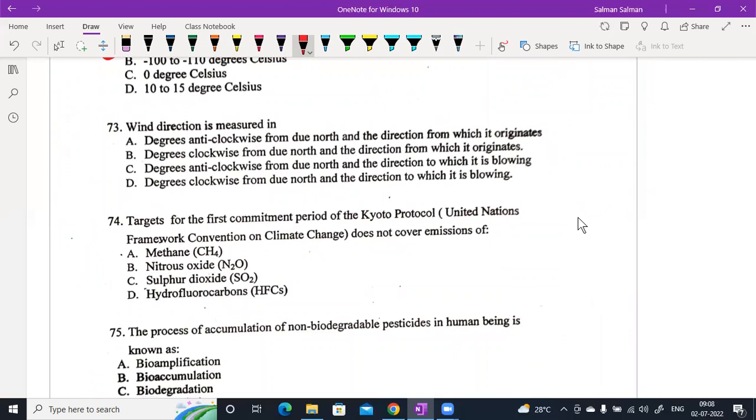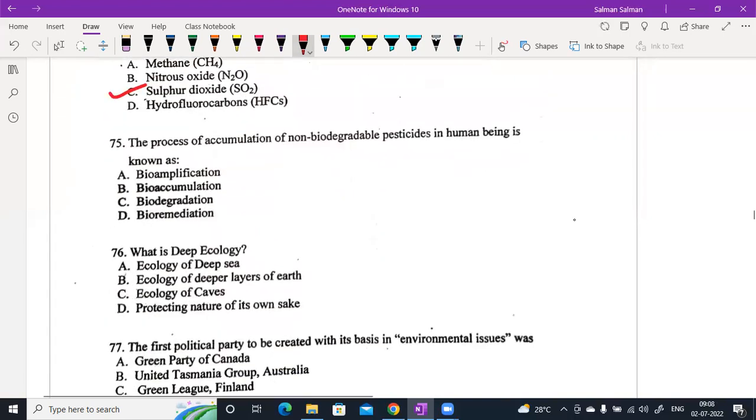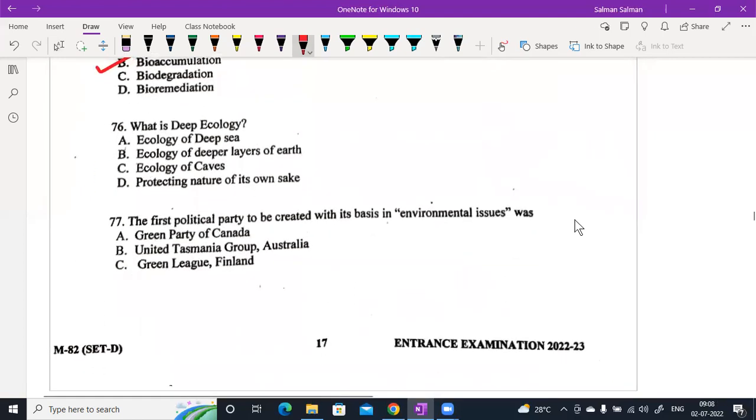Wind direction is measured in degrees clockwise from due north and the direction from which it originates. Target for the first commitment period of the Kyoto Protocol does not cover emission of SO2. The process of accumulation of non-biodegradable pesticide in human beings is known as bioaccumulation. What is deep ecology? It is protecting nature for its own sake.